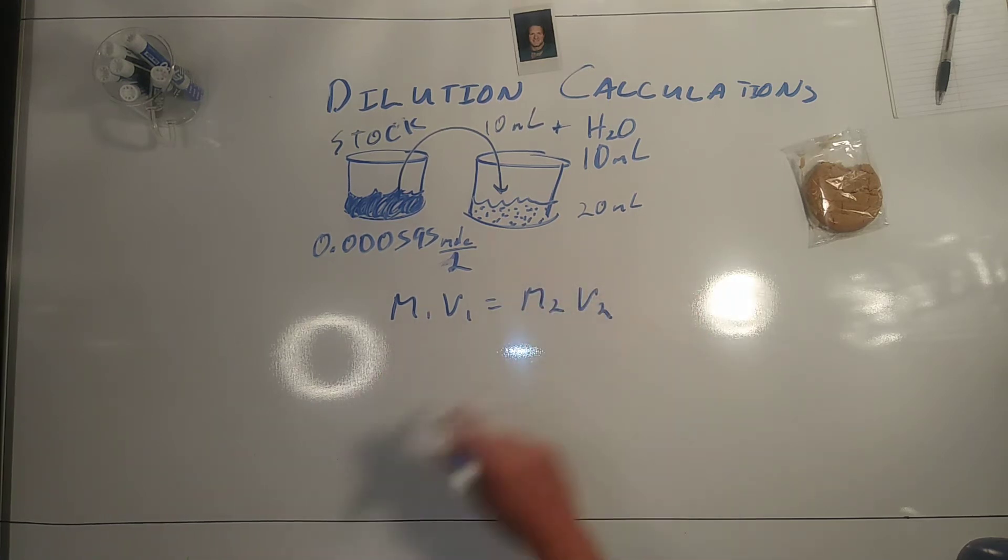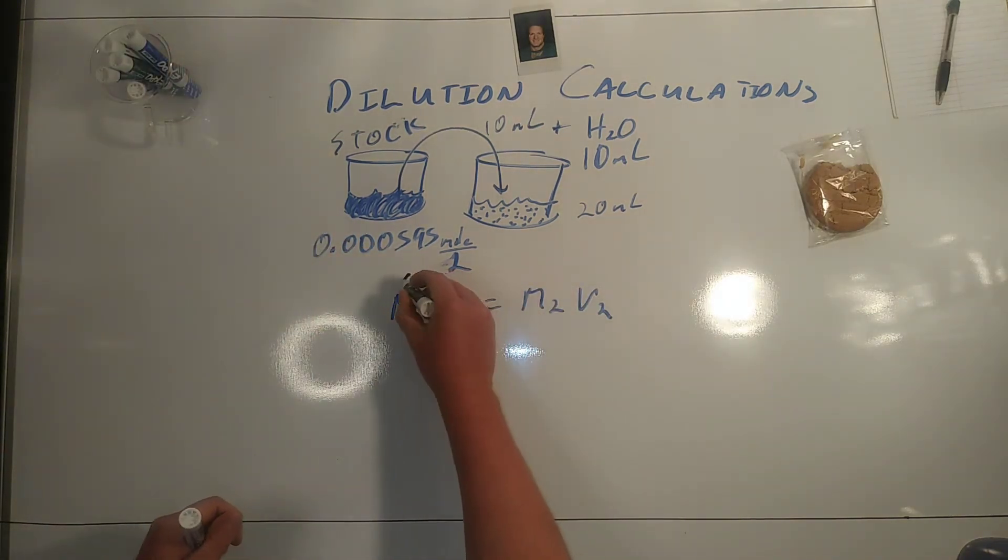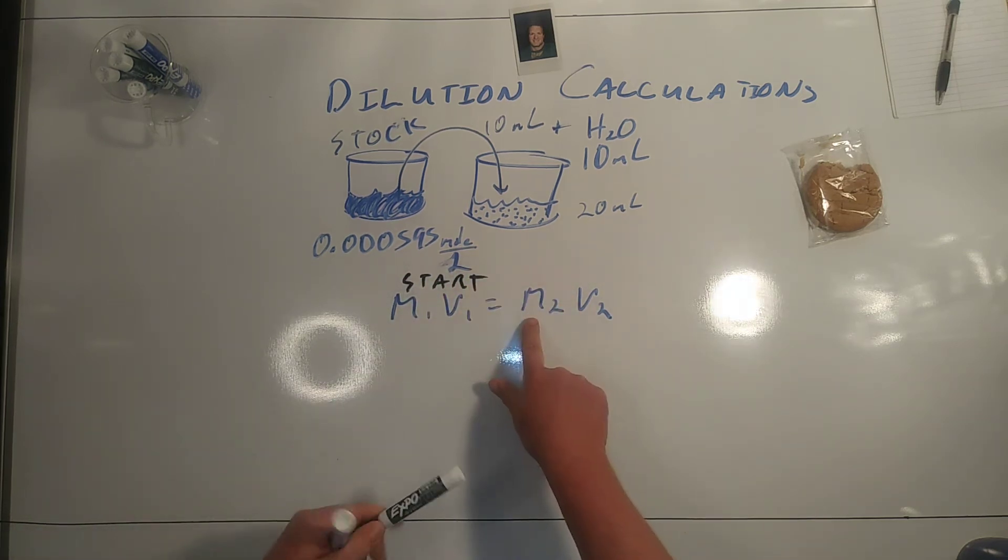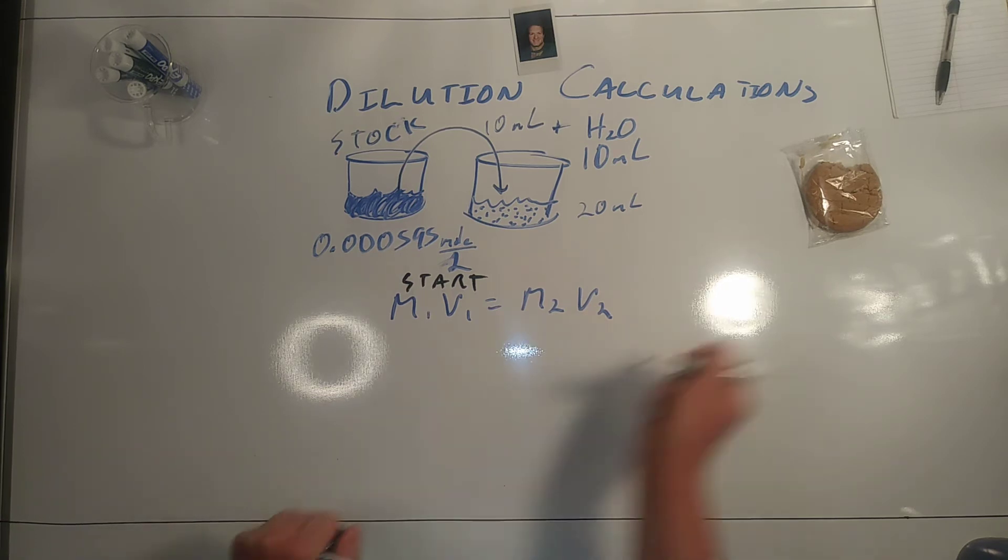This is our formula for solution dilutions: our molarity at the start and our volume used, and our molarity at the finish and the volume of the finish or the final solution.